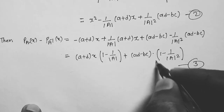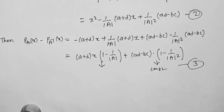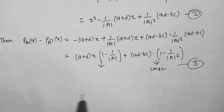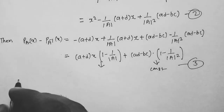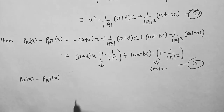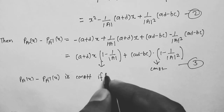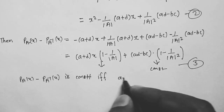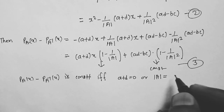Since one term includes the variable x and the other is constant, P_A(x) minus P_{A⁻¹}(x) is constant if and only if A plus D equals 0, or determinant of A equals 1.